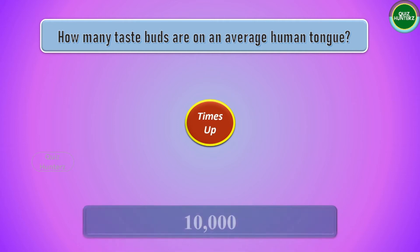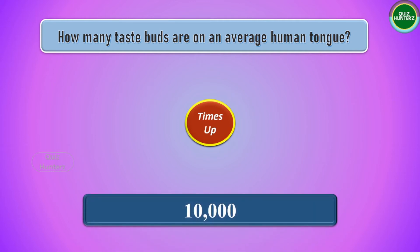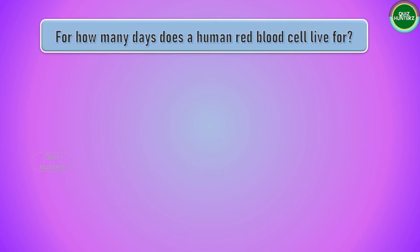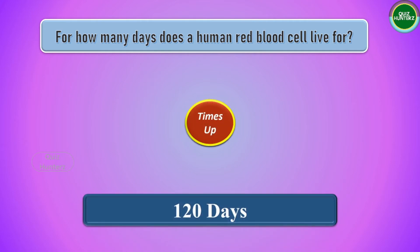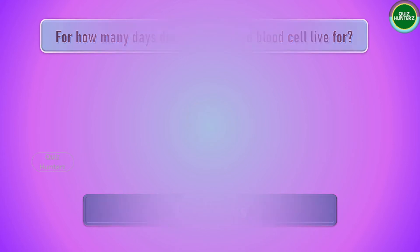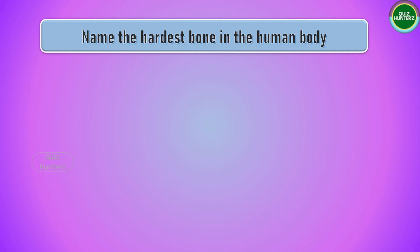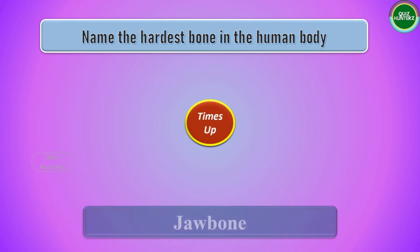The answer is 10,000. Next question: for how many days do human red blood cells live? The answer is 120 days. Next question: name the hardest bone in the human body. The answer is the jawbone.